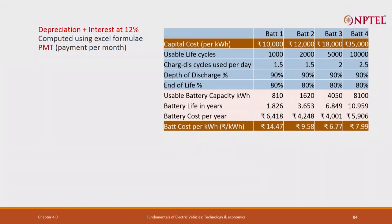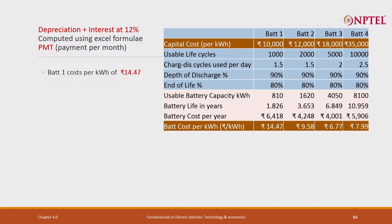Let us take all four batteries at 12 percent interest cost and calculate battery cost per kilowatt hour. Battery one, though initially cheaper, works out to 14 rupees per kilowatt hour at 12 percent interest. Battery two, with more cycles, comes to 9 rupees. Battery three works out well. Battery four works out worse — the number of cycles are very large but the cost is quite high. Even battery three, which is the lowest, is 7 rupees per kilowatt hour.